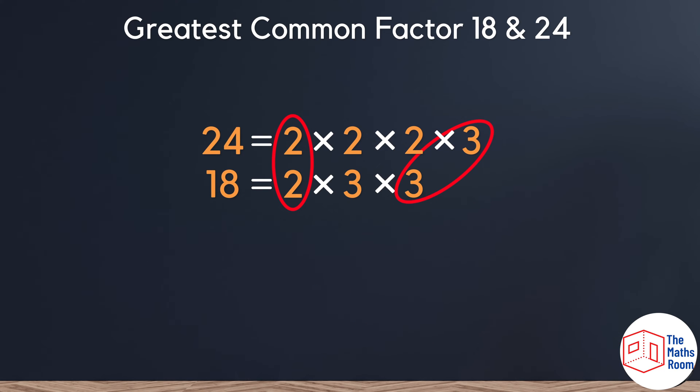So using the fact that prime numbers are building blocks of every other number, we are going to create the greatest common factor by multiplying the two prime numbers that we've highlighted here that are common to both. Multiplying them together we can see that the highest common factor or greatest common factor is 6.